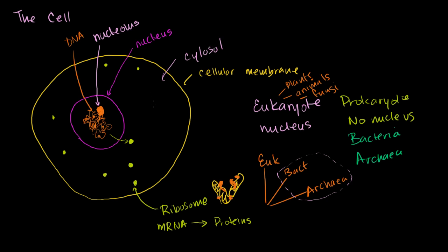But what if we want to produce proteins that are supposed to end up in the membrane of the cell, or maybe outside of the cell? Cells produce things that are used by other cells and by the rest of the body. This is where we need the endoplasmic reticulum—you can view it as a bunch of tunnels, a big flap of convoluted membrane.